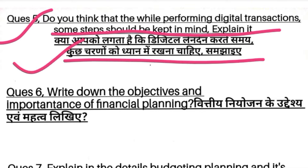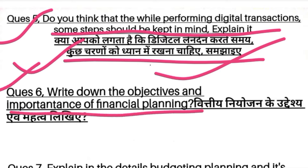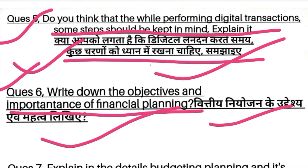In digital, whatever we do in net banking — the money we transfer — that is a transaction, and you have to explain that. Question number 6: Write down the objectives and importance of financial planning. What is the way of financial planning? This is the most important question — include writer's analysis.